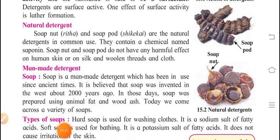Based on that, we can clear one thing that is natural detergent and man made detergent. In the natural detergent, as I said to you, Ritha and Shikakai comes, these are natural detergents which are commonly used. They contain a chemical named saponin. Soap nut and soap pod do not have any harmful effect on human skin or on silk and woolen threads and cloth.